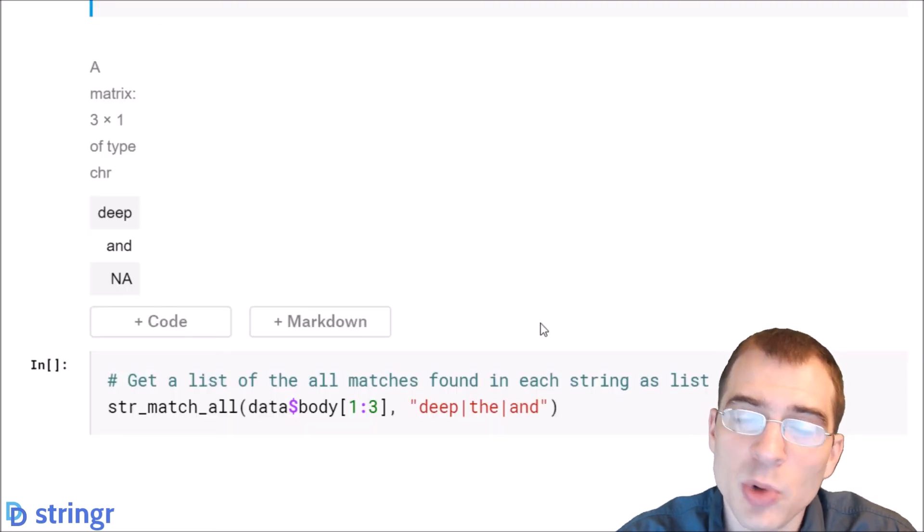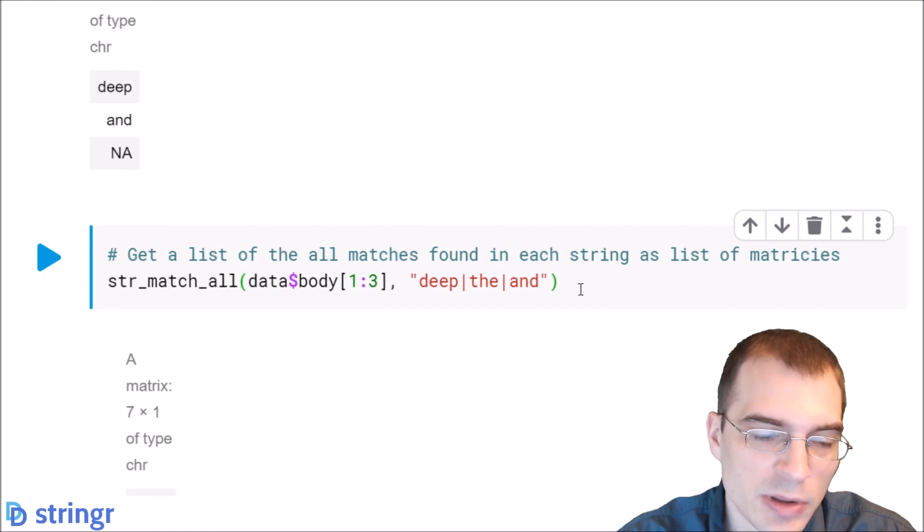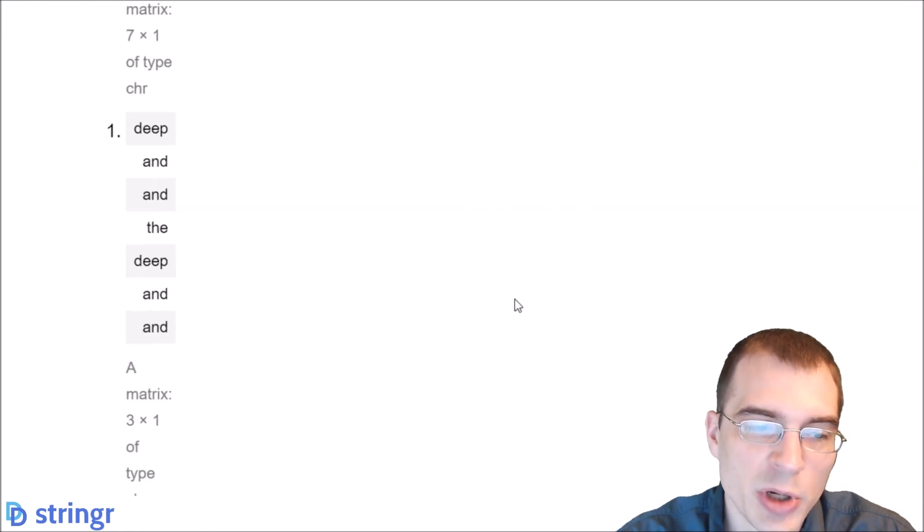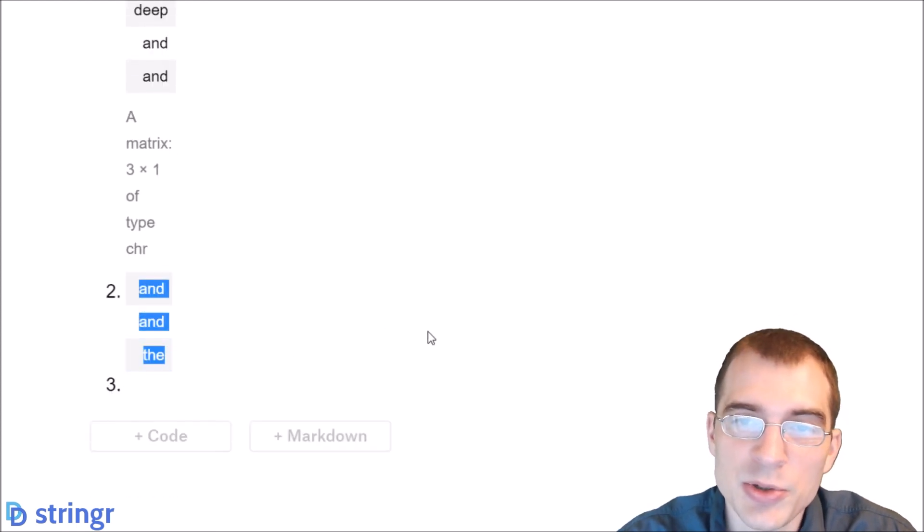And if you want to match more than just the first occurrence of a pattern, you want to match every single occurrence, you can do that with str_match_all. So in this case, we'll get every single occurrence back here as a list of matrices. So when we run this, we can see that the first post actually contained seven matches. Deep, and, and, the deep occurred again, and then and occurred twice. And in the second post, for instance, there were three matches. And again, the third post didn't have any matches.